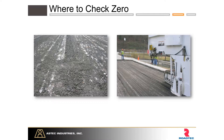That's another picture of where to check zero. If these joints didn't line up properly — if one was below or above the other — we would know something was incorrect. We didn't hit zero on one side. Something's out of whack.